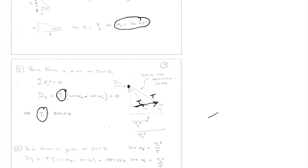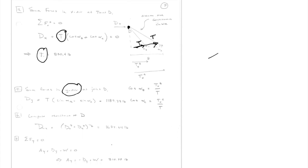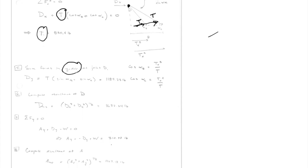Now we do the same thing at joint D, but summing the forces in the Y direction. Instead of cosines, we use sines, and then we can solve for D sub y. That comes out to be 1,189.23. We're getting pretty close to being done with statics — we have the tension in the cable and the forces at the top and bottom pins.